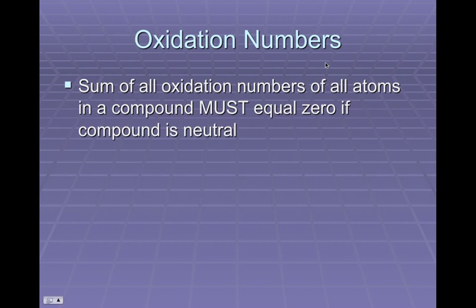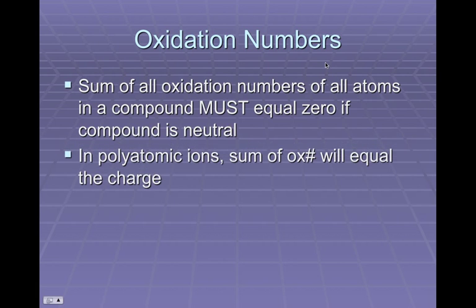In a regular neutral chemical compound, all of the oxidation numbers of all the atoms have to add up to zero. If you're dealing with a polyatomic ion, then the sum of all those oxidation numbers is going to equal the charge on the polyatomic ion.